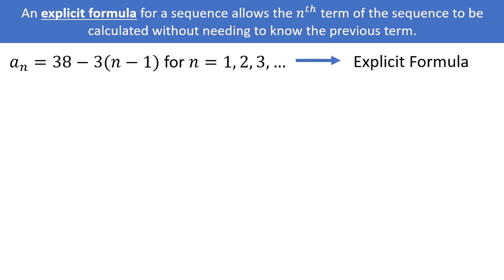The dot dot dot implies that this is an infinite sequence, and any natural number can be plugged in for n, which includes 1, 2, 3, 4, etc. Sometimes you won't see n defined, and can assume that the sequence goes on forever. If we plug in 1, we get 38 minus 3 times (1 minus 1), which is just 38, as the second term cancels.